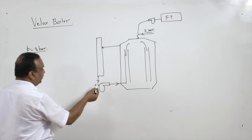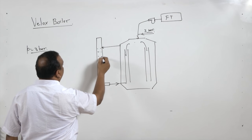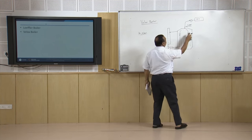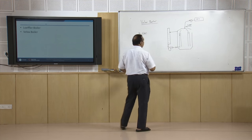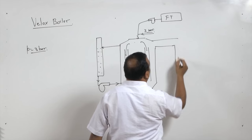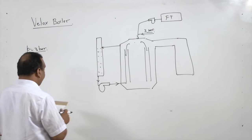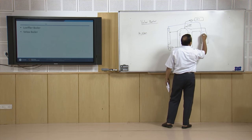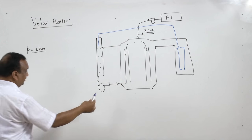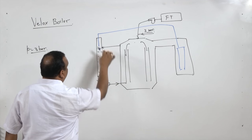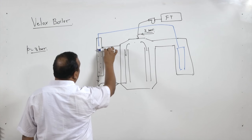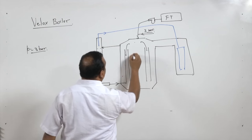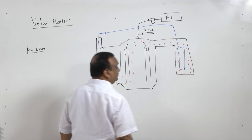The pump draws water from the steam separator, and generated steam goes back to the steam separator — it is a closed loop. Every high pressure boiler must have a superheater. Flue gases from this chamber go to the superheater. The saturated steam collected in the steam separator goes to the superheater, where superheating takes place. The area around the superheater is filled with the flue gases.